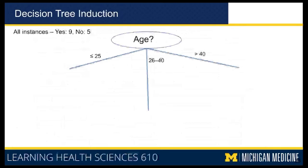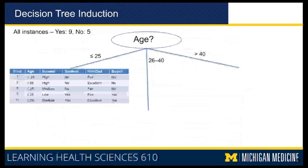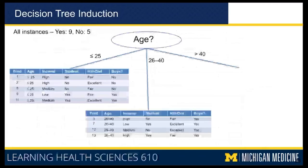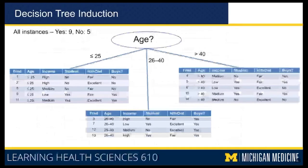You split the 14 instances into smaller groups depending on their age value. Instances 1, 2, 8, 9, and 11 are all less than 25, going to the left side of the decision tree. For 26 to 40 we have instances 3, 7, 12, and 13. For greater than 40 we have the remaining instances 4, 5, 6, 10, and 14 on the right-hand side.